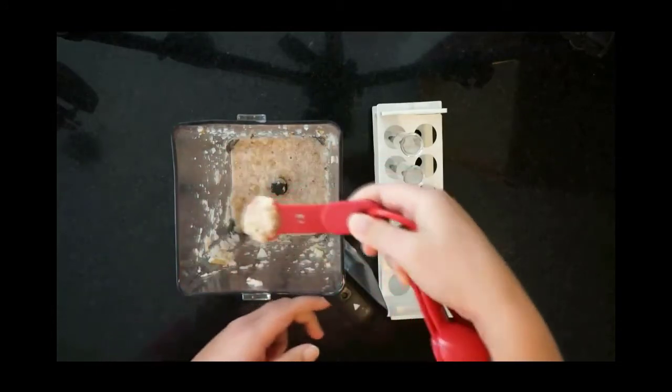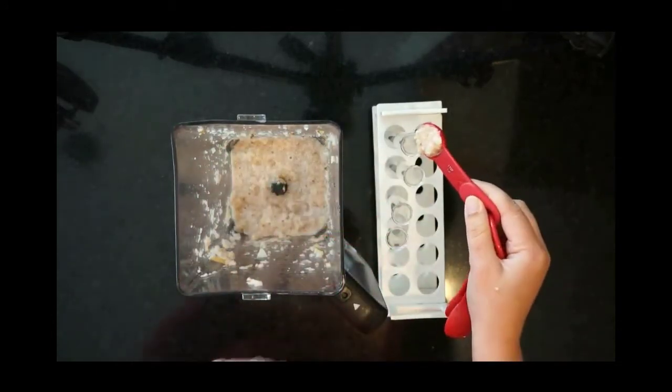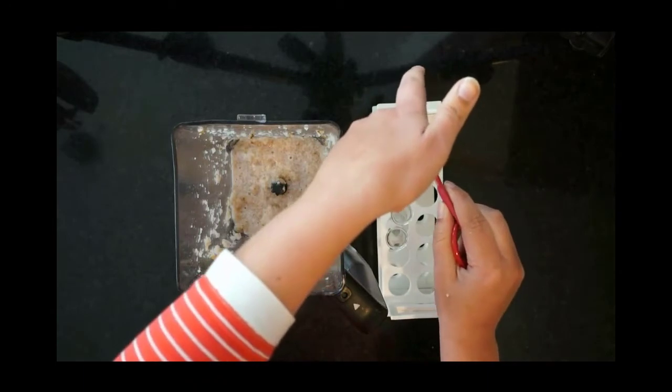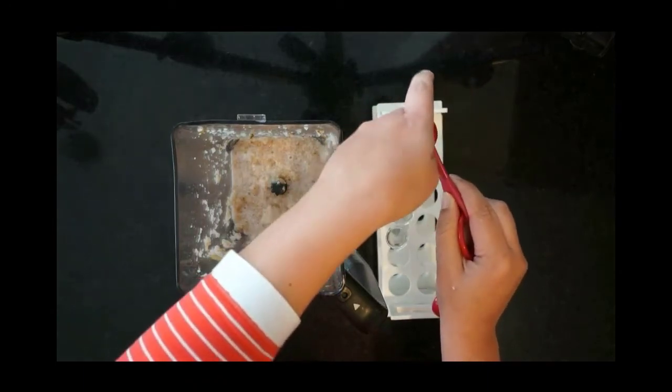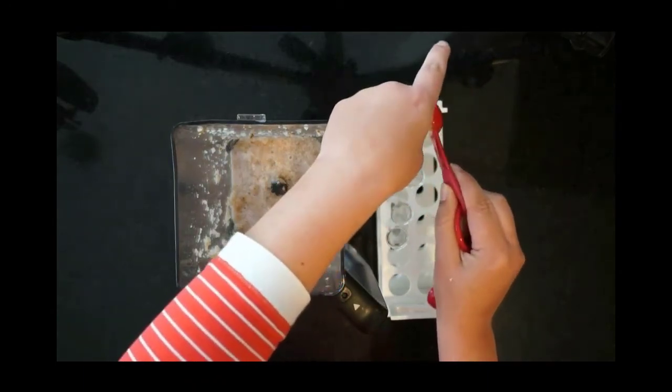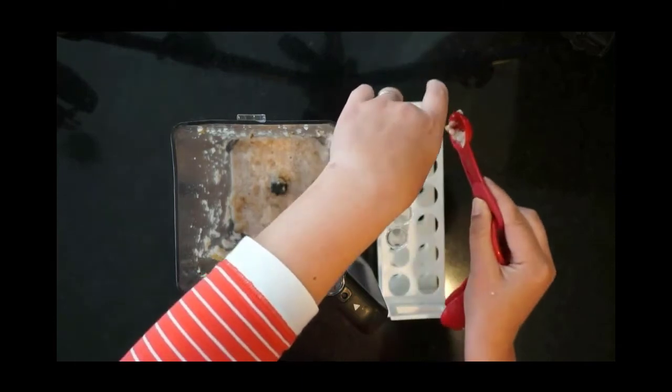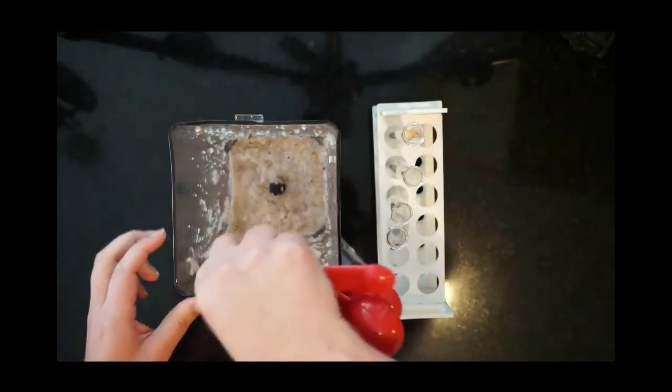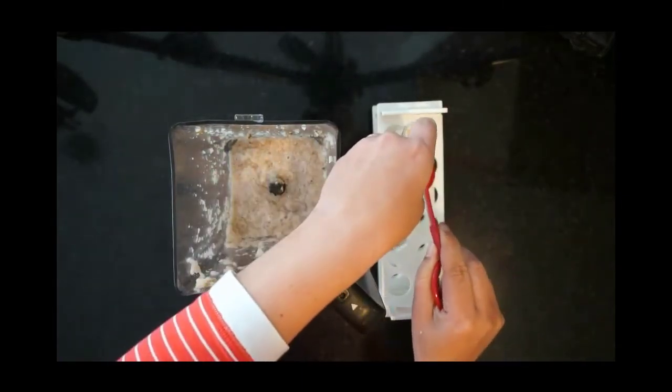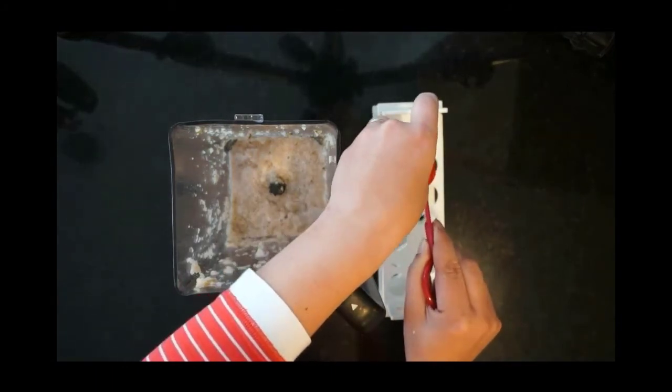Then we're going to take a teaspoon of that mixture and put it in each of the first three of your test tubes or cups. You can tap it down or push it to the bottom, but that potato mixture should be all the way on the bottom when you're done.